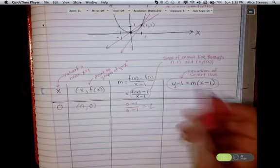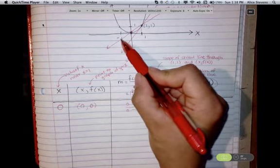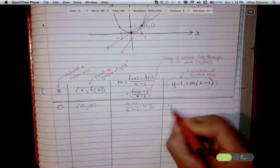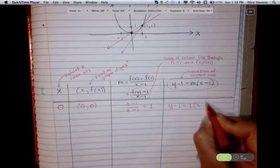Furthermore, the equation of the secant line that I have right here is going to be y minus 1 equal to 1 times x minus 1.